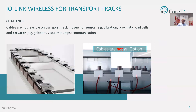This next use case is for enabling communication on independent mover transport systems — a key element in new machine design across industries such as consumer packaged goods, food and beverage, and automotive. However, the independent movers on the tracks are still limited. They lack the ability to have real-time control and monitoring communication directly on the mover itself — for example, controlling vacuum pumps or grippers to grab and hold different product types, automatically adjusting to different sizes, shapes, and weight while in motion. They also lack the ability to communicate ongoing sensor data for predictive maintenance, such as vibration, proximity, and weight.